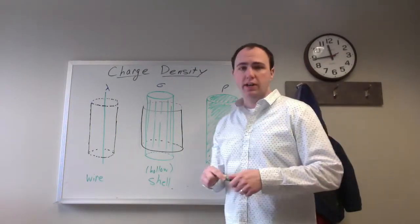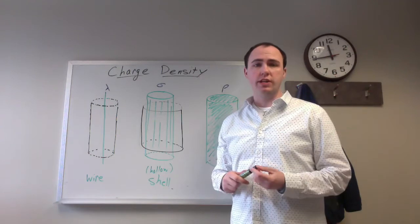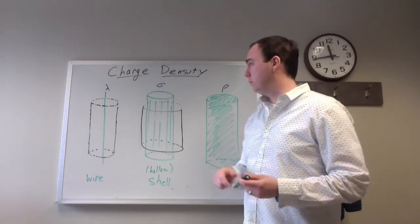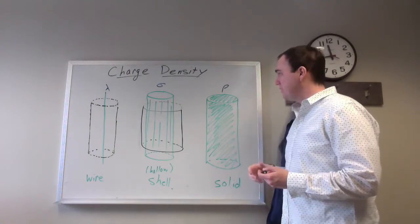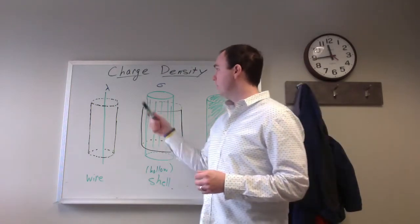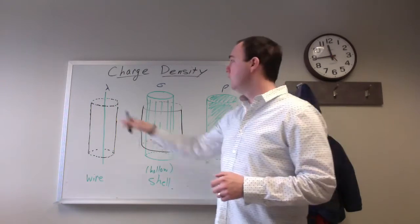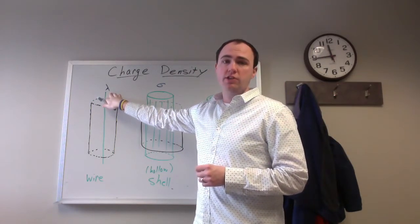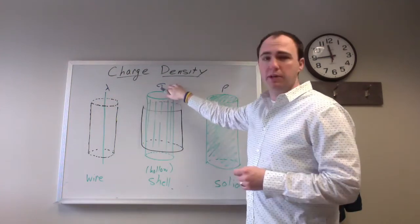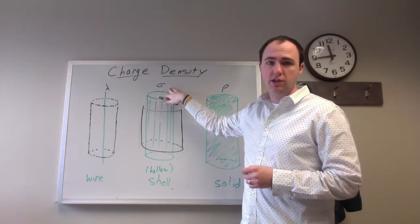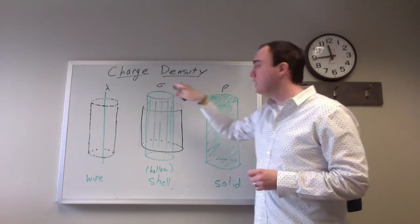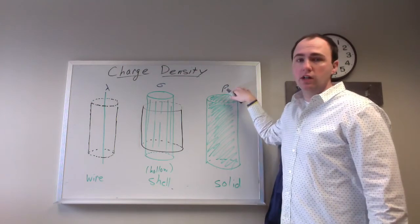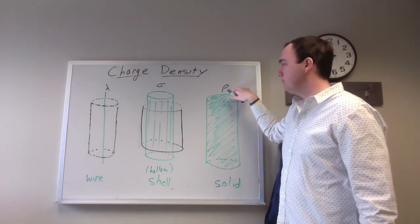I've been getting some questions about the different types of charge density and how to handle those, especially in Gauss's law problems. We basically have three different situations: lambda, which is a linear charge density or charge per unit length; sigma, which is a surface charge density or charge per unit area; and rho, which is a volume charge density or charge per unit volume.